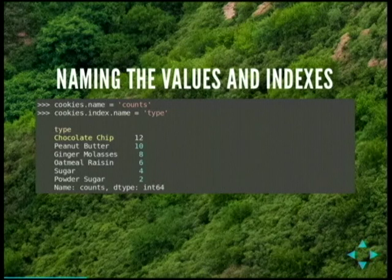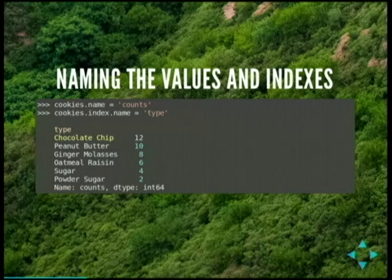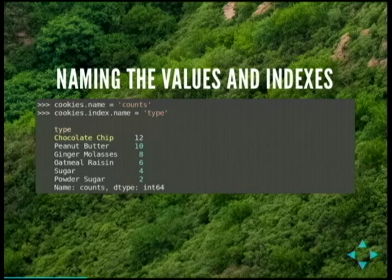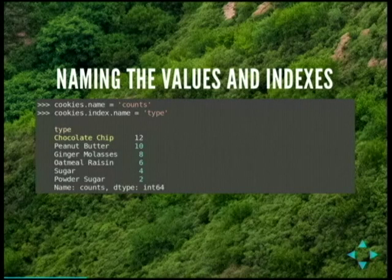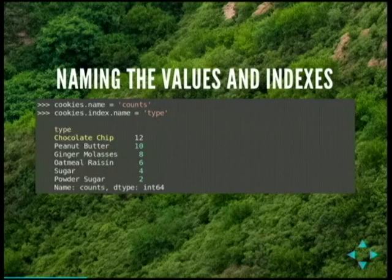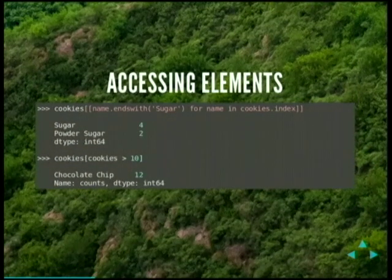I can name the series elements. I want to name this the count, and then index them by type. So I've named the cookies column 'count' and the index 'type'. Now I can reference those by those names — I can say series.type['chocolate chip'] and it will give me the value for the chocolate chip index.